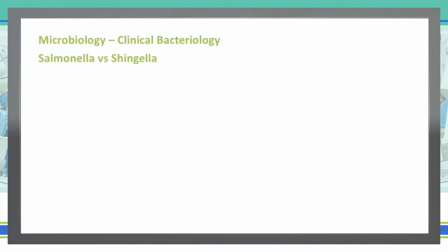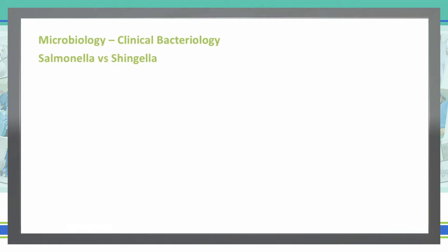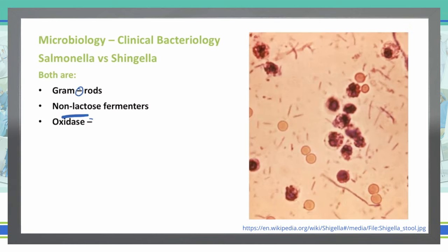They are both very commonly confused, so we're going to discuss some various things that are different between the two to help you get those questions answers right on the test. Both Salmonella and Shigella are going to be gram-negative rods. They are also both non-lactose fermenters, both oxidase negative, and they can invade the GI tract with the M cells of Peyer's patches.